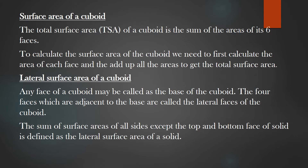The Total Surface Area, or TSA, of a cuboid is the sum of areas of its six faces. To calculate the total surface area of the cuboid, we add up all the areas of all six faces. Any face of a cuboid may be called the base. The four faces adjacent to the base are called lateral faces. The sum of the surface areas of all sides except the top and bottom face is defined as the Lateral Surface Area, or LSA.